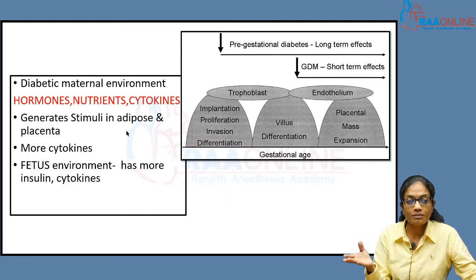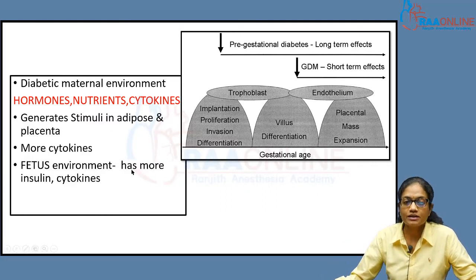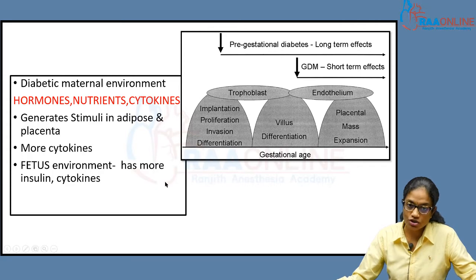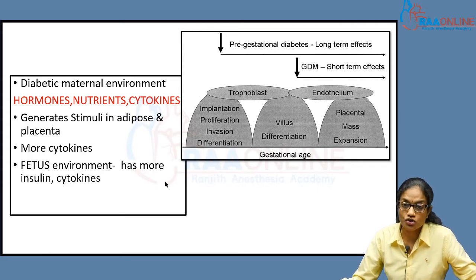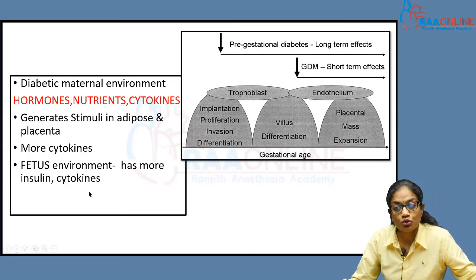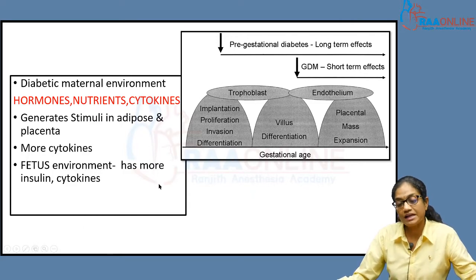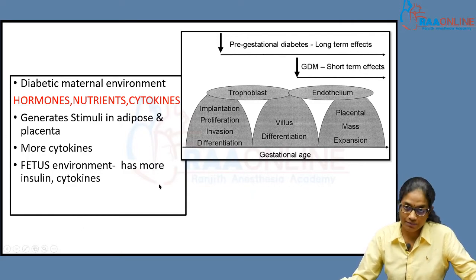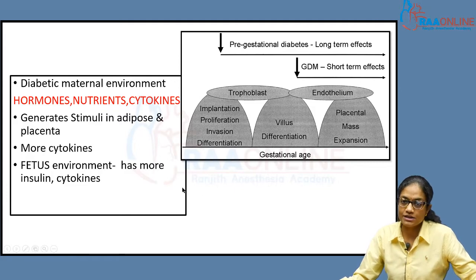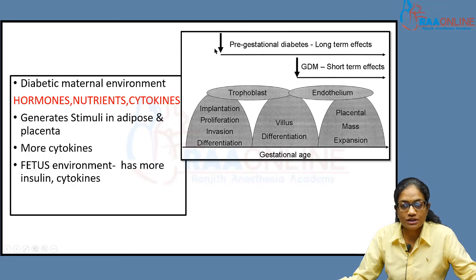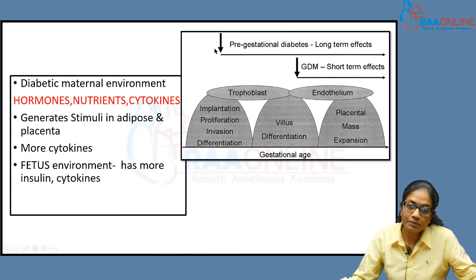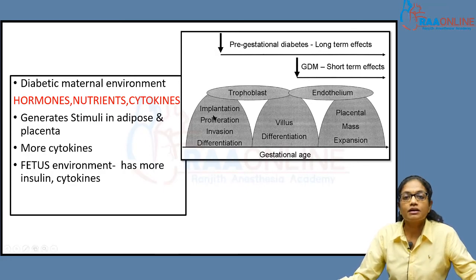These cytokines can affect the placenta and the fetus. On the fetal side, there is more insulin because the baby is trying to compensate for the high sugar, and this again causes more cytokines. Overall, the uterine-placental unit is actually damaged.